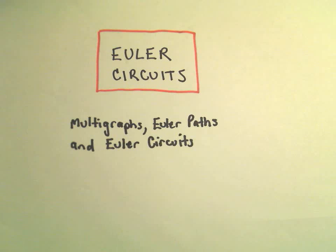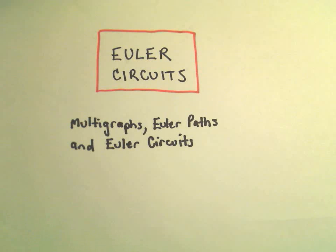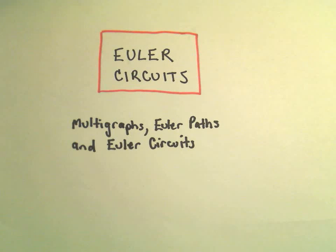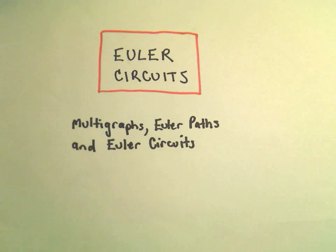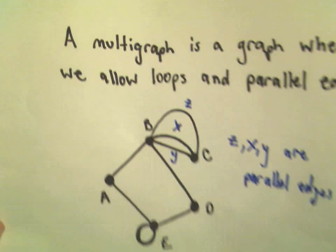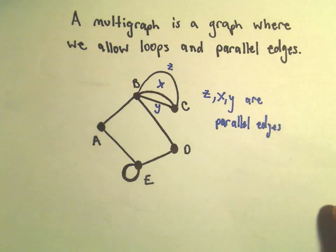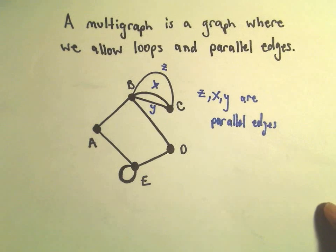In this video I want to talk about Euler circuits, and to do that we'll have to talk a little bit about multigraphs, and also we'll talk about Euler paths, and even just regular paths as well. A little terminology here. The first thing is the notion of a multigraph, and all a multigraph is, it's just a graph where we allow loops and parallel edges.